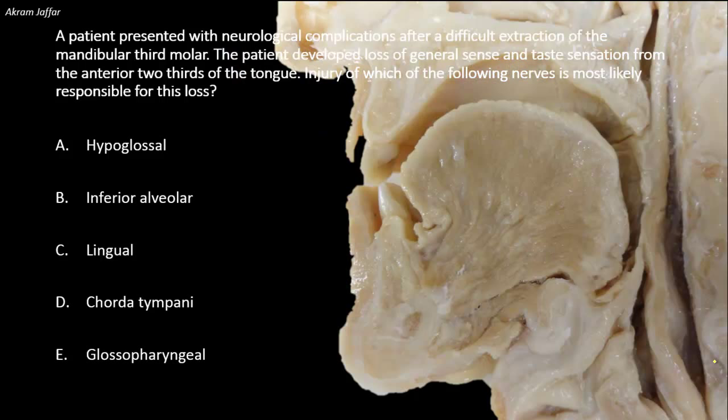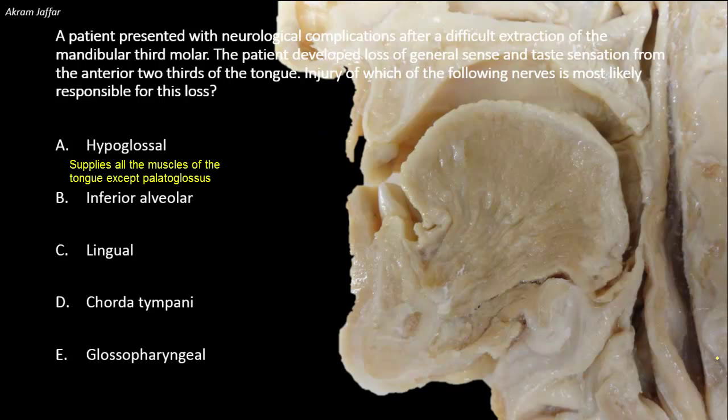First, we need to remember the nerve supply of the tongue. All the muscles of the tongue are supplied by the hypoglossal nerve, except palatoglossus, which can be considered as a muscle of the palate, as the beginning of its name indicates — 'palato'. Regarding the sensory innervation of the tongue, this relates to the anatomical and embryological development of the tongue and its division into anterior two-thirds and a posterior one-third.